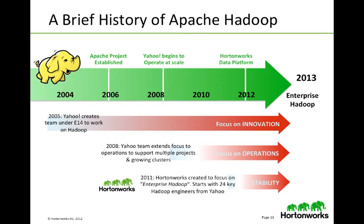Then in 2011, 24 of those original developers formed Hortonworks to make an enterprise-viable Apache Hadoop solution, and they started working on stability. This team has focused on innovation, operations, and stability to provide enterprise-viable Hadoop.